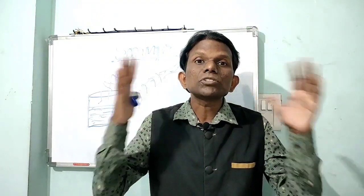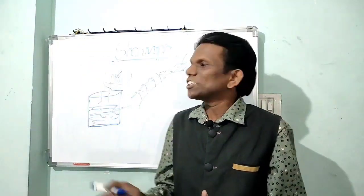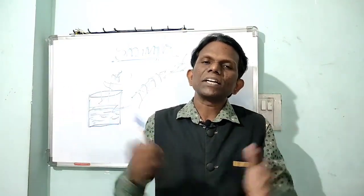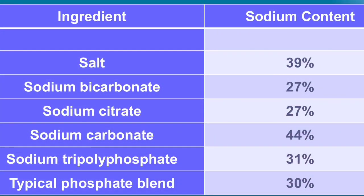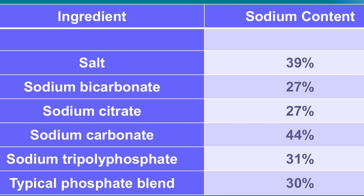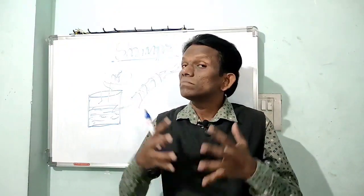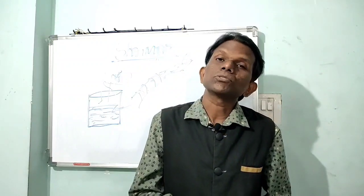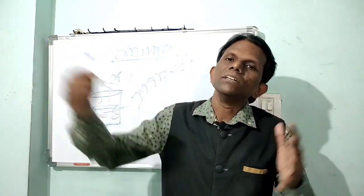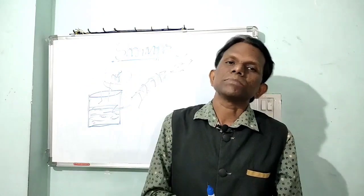As per importing country standards, one percent salt is allowable, which contains 0.60 percent sodium — that is 600 mg per 100 grams of shrimp meat. Some buyers insist the salt should not exceed 0.7 percent, meaning sodium content should not exceed 400 milligrams per 100 grams of shrimp meat.